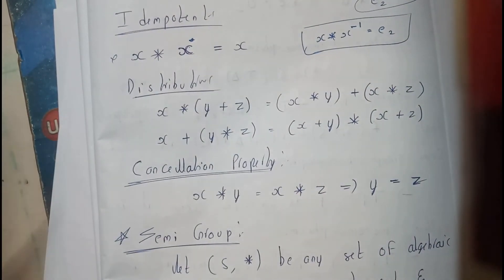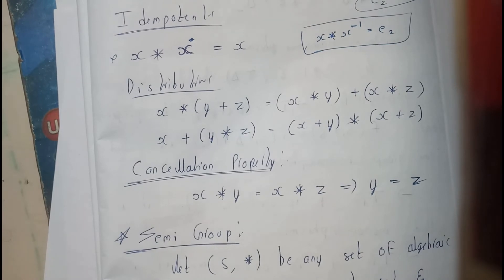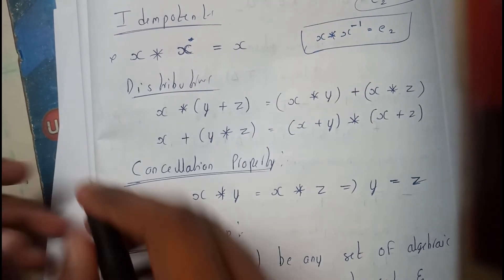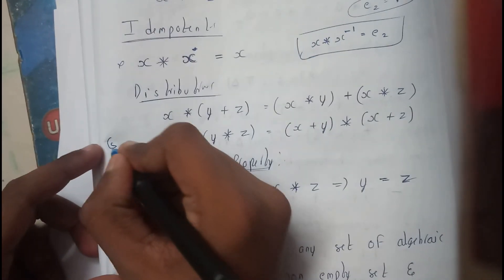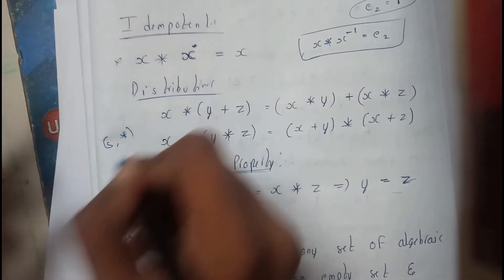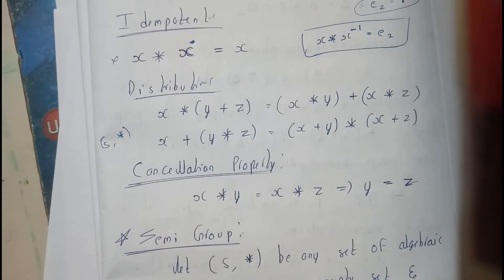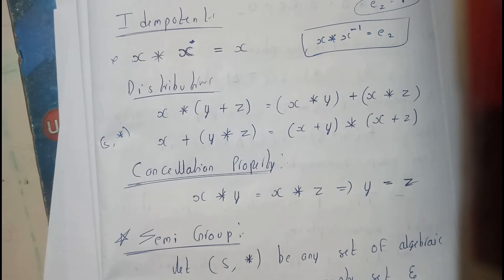I hope everyone got at least a bit of an idea on what is an algebraic structure. Algebraic structure is nothing but it consists of a non-empty set with a binary operation. That's it, guys, nothing more than that. I hope this video helps you to give a basic idea on what is an algebraic structure. Thanks for watching, guys.